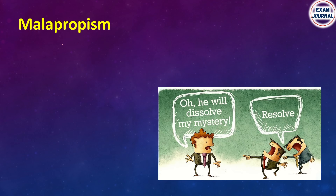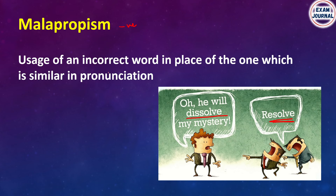Malapropism. This is known as a negative connotation. Malapropism means incorrect word usage in place of a word that is similar in pronunciation. In the image shown, the person says 'he will dissolve my mystery' — but the correct word is not 'dissolve.' Using 'dissolved' in place of the correct word is malapropism.